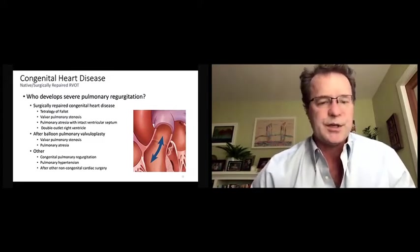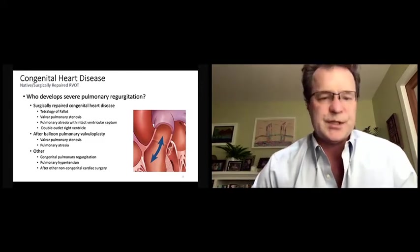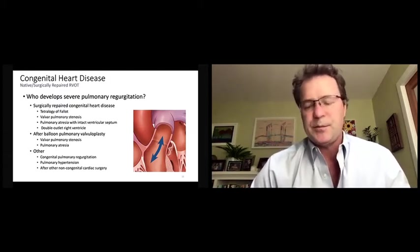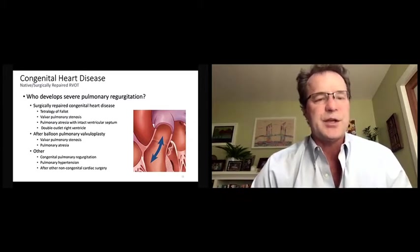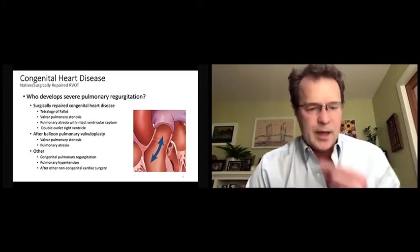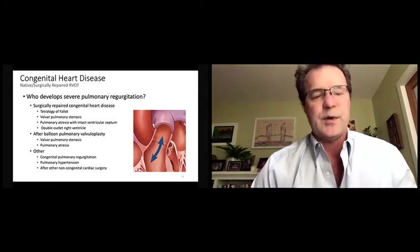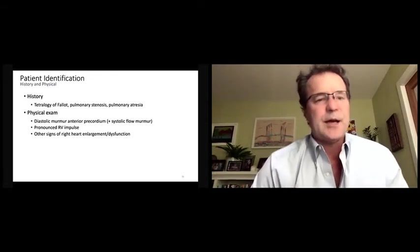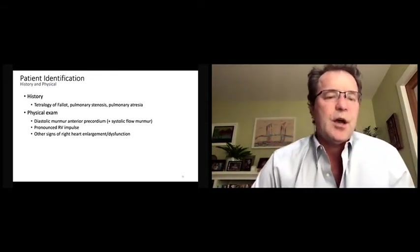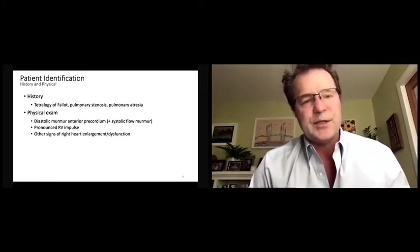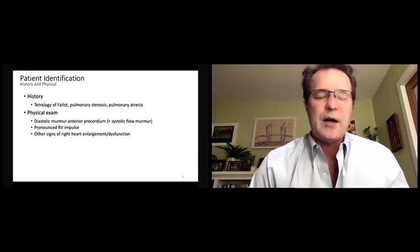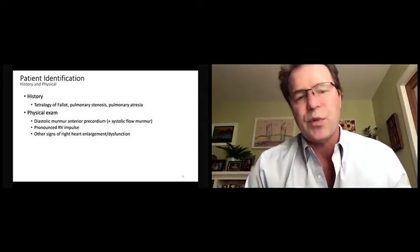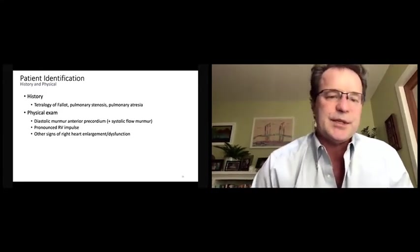Also, patients with valvar pulmonary stenosis or pulmonary atresia who underwent a balloon procedure, a balloon pulmonary valvuloplasty or pulmonary valvotomy early in life, they can develop severe pulmonary regurgitation and be appropriate candidates for this device. And occasionally there are other patients who haven't had any of these interventions, whether they have pulmonary hypertension or congenital PR, or occasionally consequences of some other non-congenital cardiac or thoracic surgery. So, if you're not taking care of congenital patients all the time, how do you figure out whether patients might be a potential candidate? Well, history is one relatively straightforward way to do that. If it's a patient who's got a history of tetralogy of Fallot or valvar pulmonary stenosis or pulmonary atresia, chances are pretty good that they have either had a pulmonary valve replacement or will need one at some point.